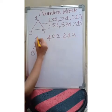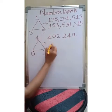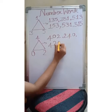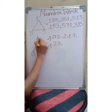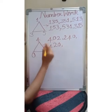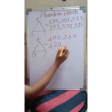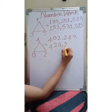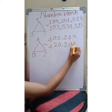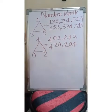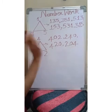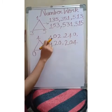Next we go to four, two, zero — four hundred and twenty. And then two, zero, four — two hundred and four. This way we got four numbers using the digits four, zero and two.